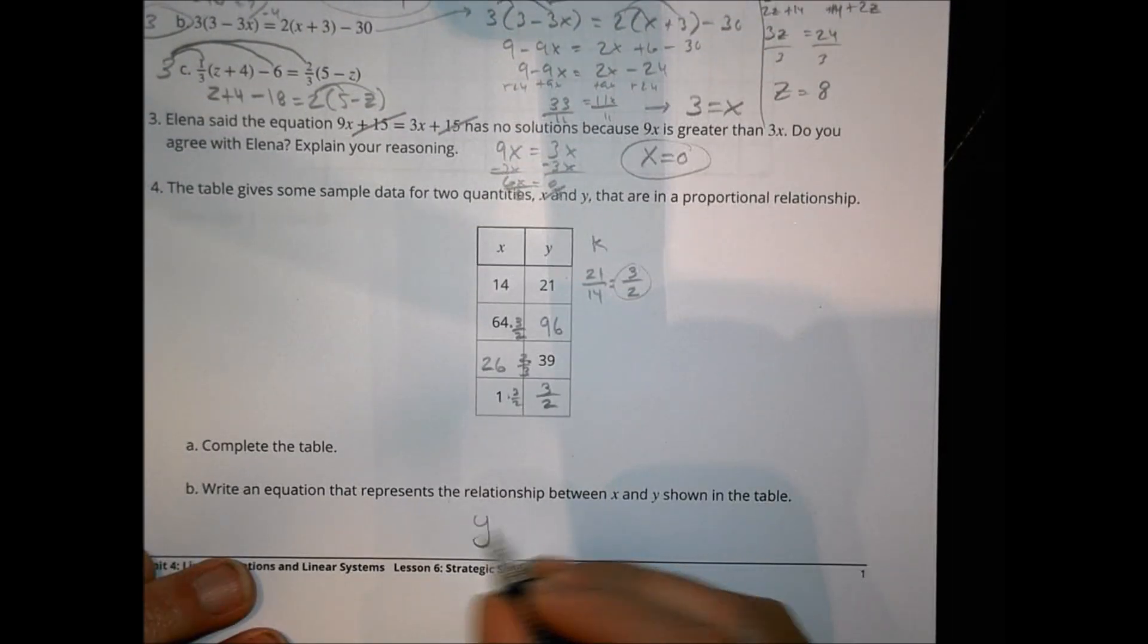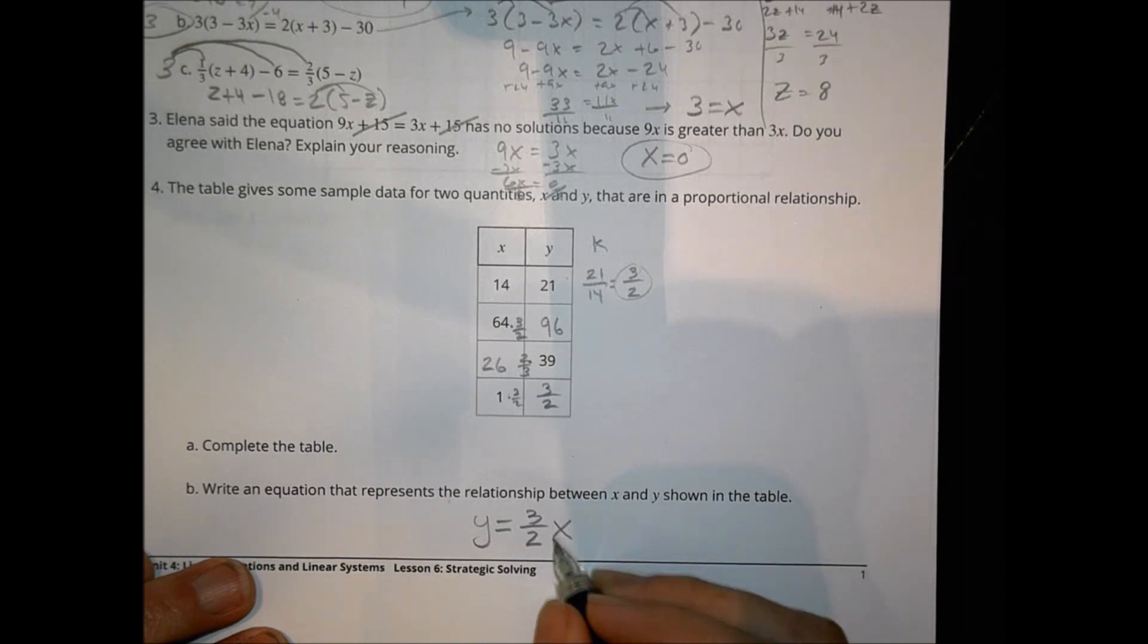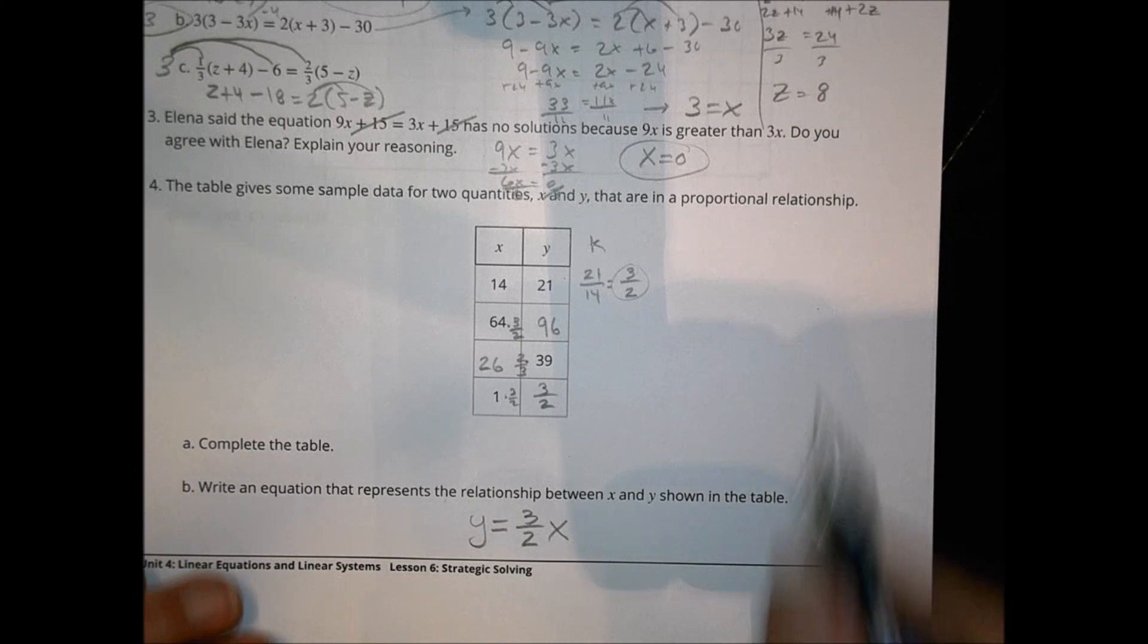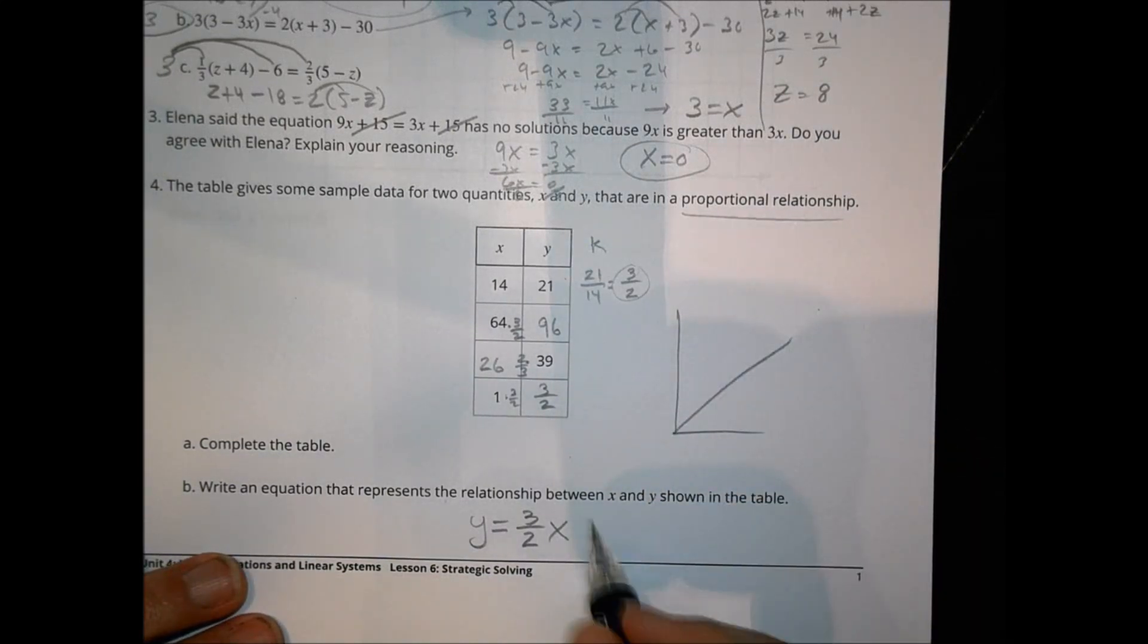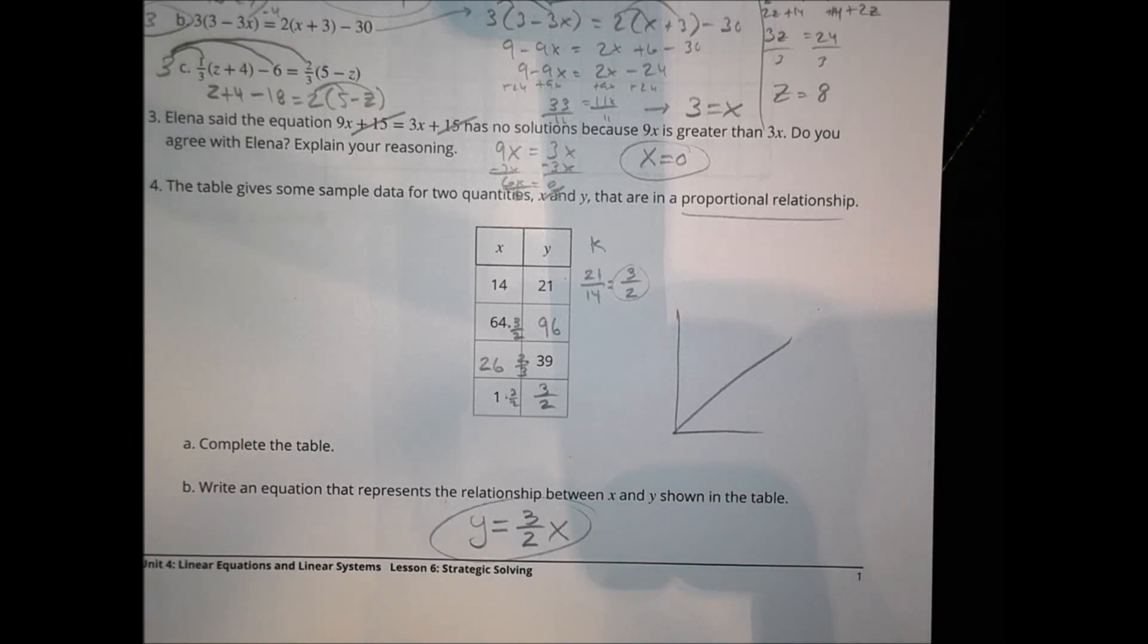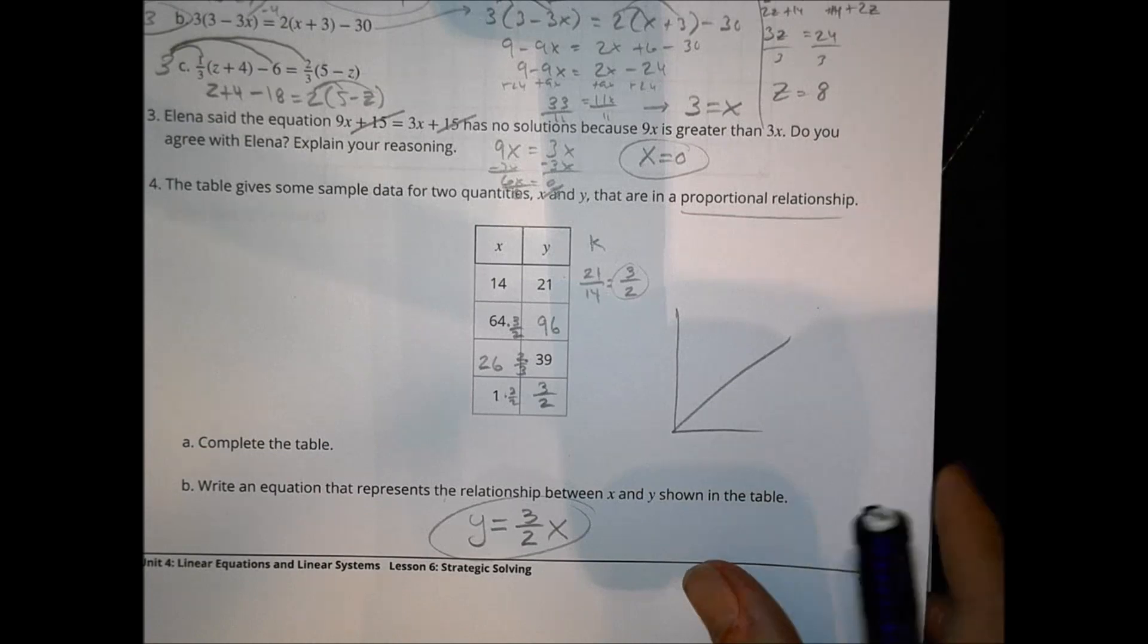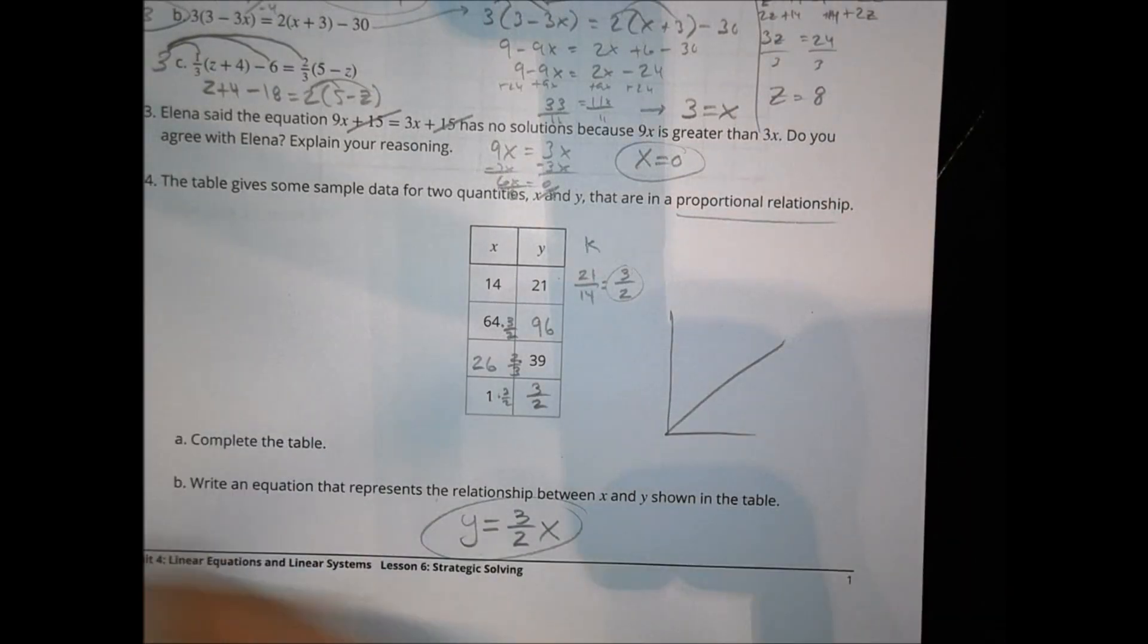In terms of an equation, we can say that Y equals our slope, or our constant proportionality, 3 over 2, X. And because it's a proportional relationship, it tells us it's going to be going through the origin, so we don't have to worry about anything after that. We leave our equation like that. Now it wants us to graph this relationship. So let's take a look at how we would graph that.